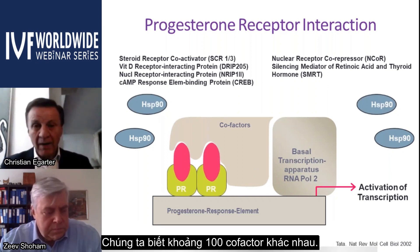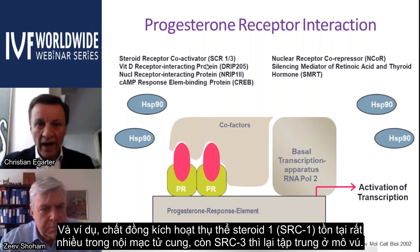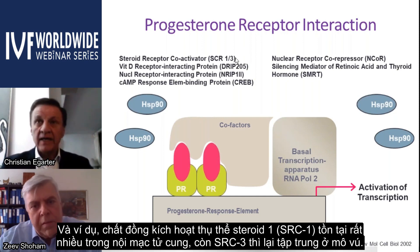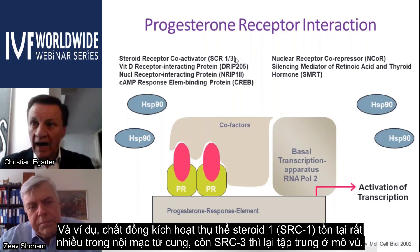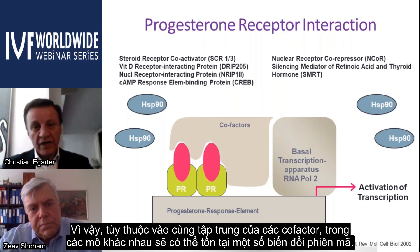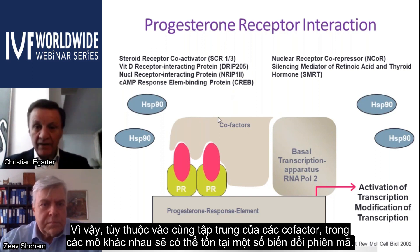What makes the situation more complex is that different tissues have different concentrations of coactivators or corepressors. We know about 100 different cofactors — for instance, steroid receptor coactivator 1 is abundantly present within the endometrium, whereas subtype 3 is more concentrated in breast tissue. Depending on the concentration of cofactors, there may be modifications of transcription in various tissues.